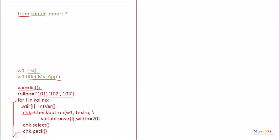A CheckButton is then created with the name CHK for the window. The text is associated with the value from i — so it will be 101, 102, 103 respectively. A variable is associated to the CheckButton as var[i], that is var[101] for the first CheckButton. The width is given the value 20. Once the CheckButton is created, we call select so its initial status is ON. The pack method places the CheckButton on the GUI. This way, the number of CheckButtons created depends on the values present in the roll_number dictionary.